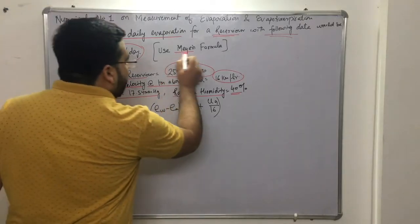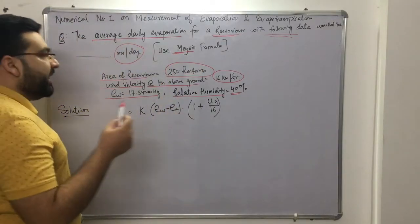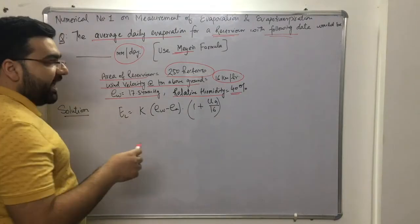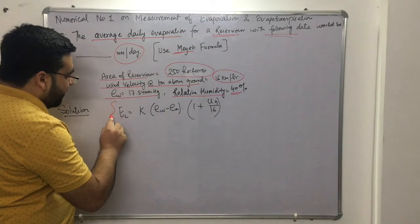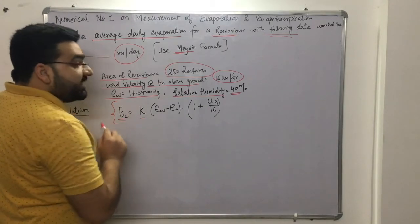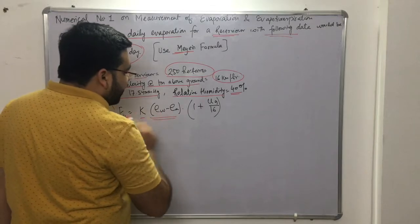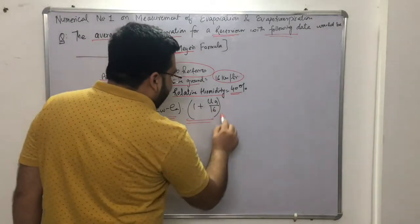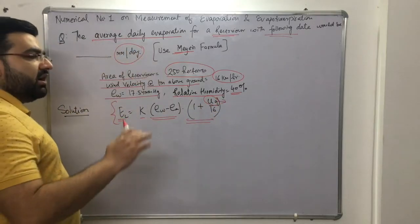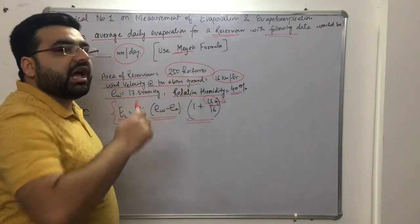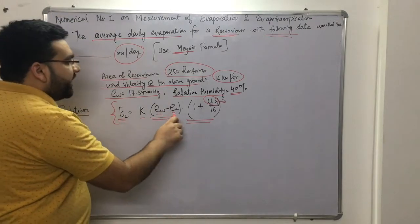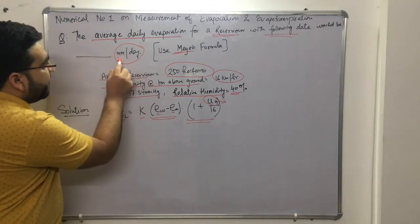We will use Meyer's formula, which is an empirical formula for calculating evaporation. The formula is: E = K × (ew − ea) × (1 + u9/16), where u9 is the wind velocity in km/hr at 9 meters above ground level, and ew and ea are in mm of Hg, giving evaporation in mm per day.